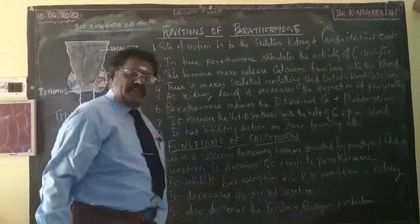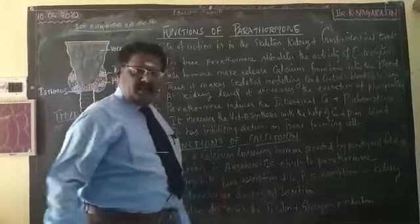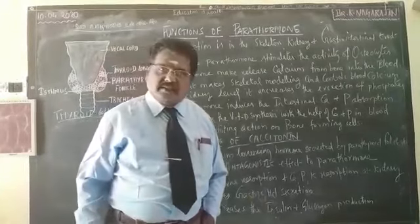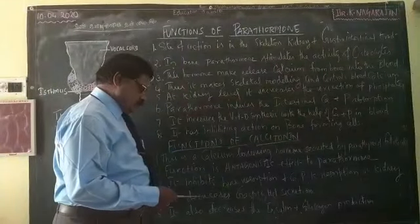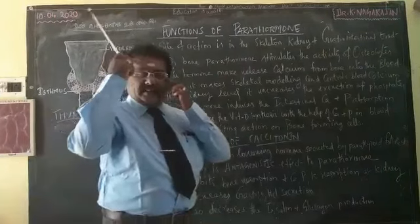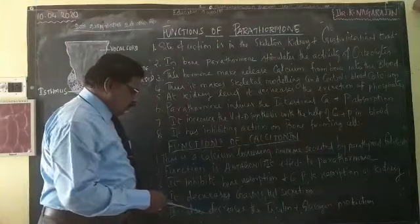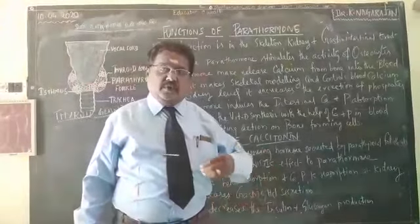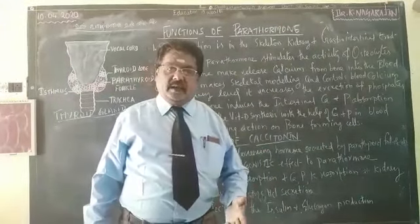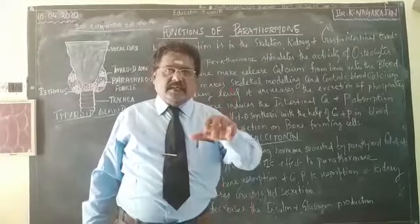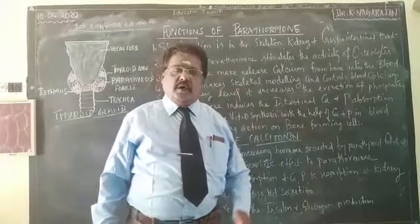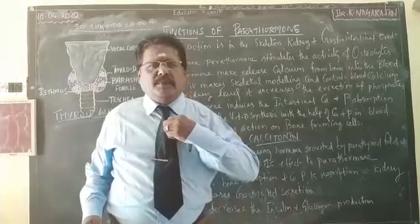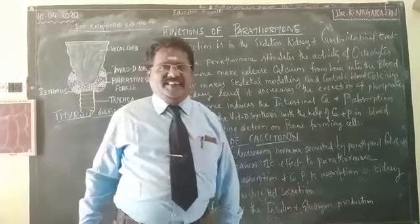The fourth function of calcitonin is that it decreases the gastric secretion of hydrochloric acid. Excess secretion of hydrochloric acid is harmful to the stomach and intestinal tract, so calcitonin naturally decreases gastrointestinal secretion of hydrochloric acid. The last function is that calcitonin also decreases insulin and glucagon production. When insulin or glucagon production is found to be in excess, calcitonin suppresses the secretion of these hormones.